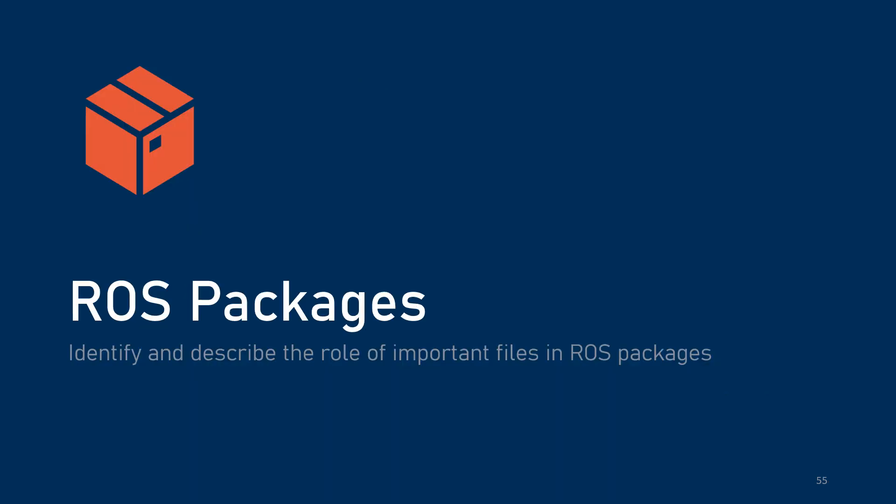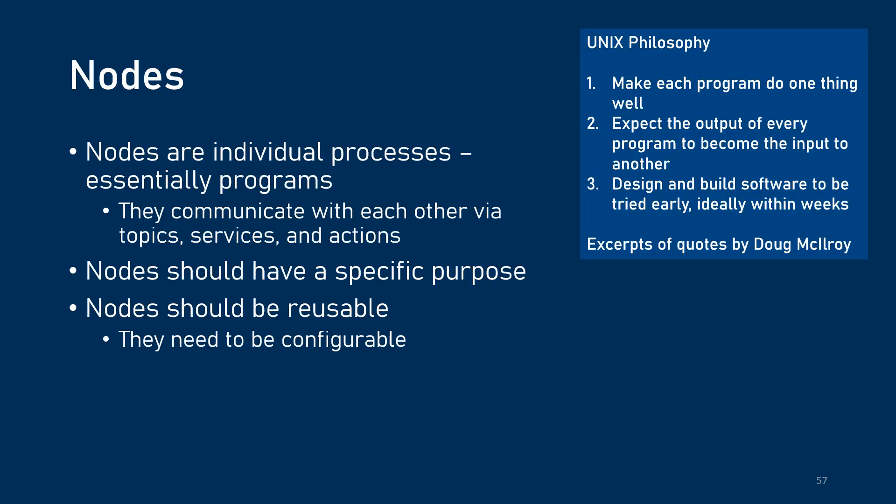Now we're going to talk about how we actually bundle ROS programs. Nodes are individual processes — basically programs — that communicate with other ROS programs via topics, services, and actions, and they can do more than one. Nodes will often have topics, services, and actions all going on. Nodes should be pretty specific in terms of purpose — you don't want a node running your entire robot, you want a node running something like just a camera. And nodes should be written to be configurable and reusable. Let's say you have multiple cameras and they all have different IDs.